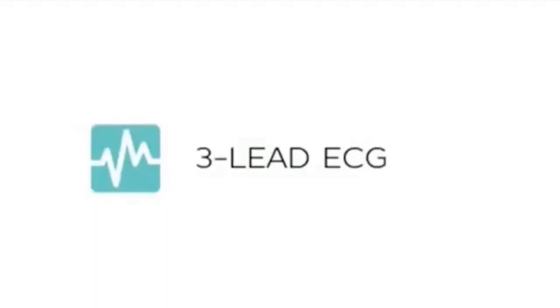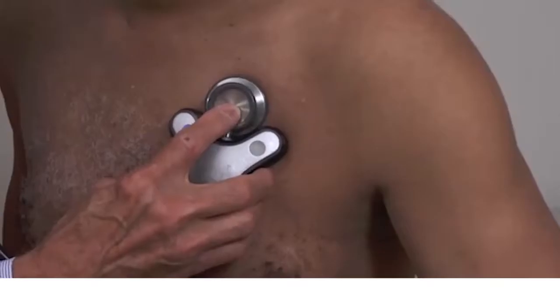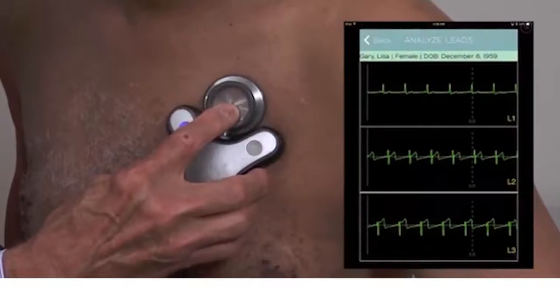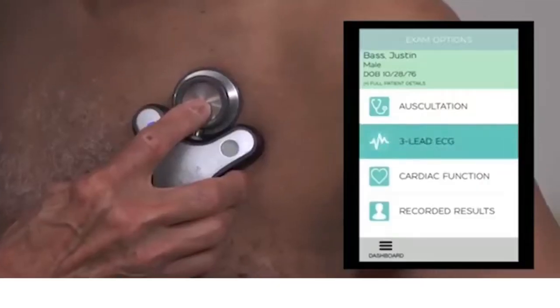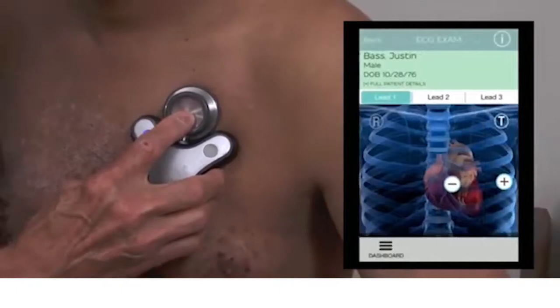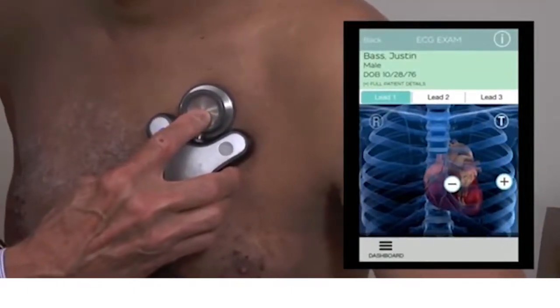Three-lead ECG: Cardio Sleeve dry ECG electrodes record high-fidelity ECG at leads 1, 2, and 3. To begin, a chest illustration displays the proper Cardio Sleeve placement for a specific lead recording.